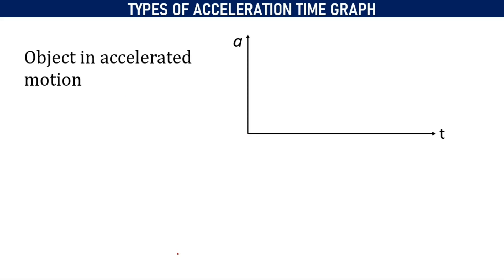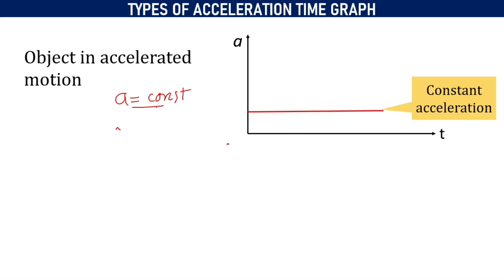Next, we are going to consider an object in accelerated motion. When the value of acceleration is constant — that is, acceleration does not change with respect to time — we will get again a straight line which is parallel to the time axis. Note that this line does not coincide with the x-axis but is parallel to the time axis.